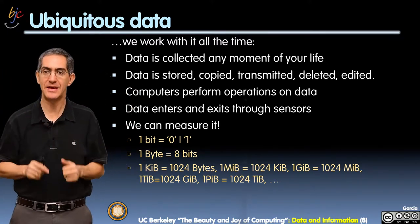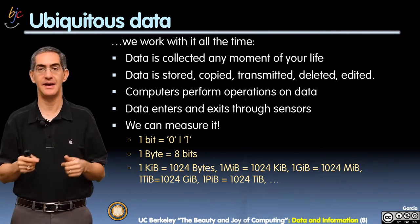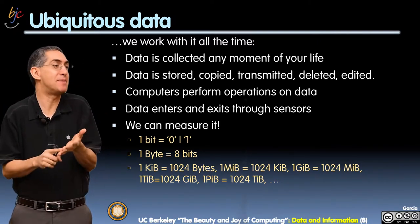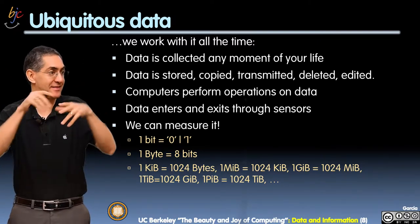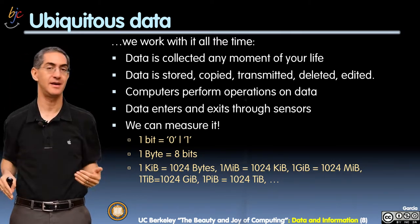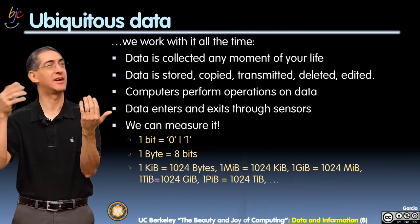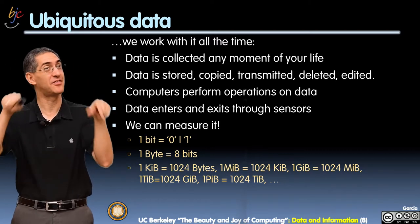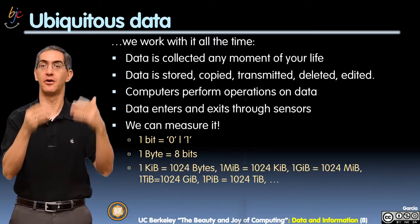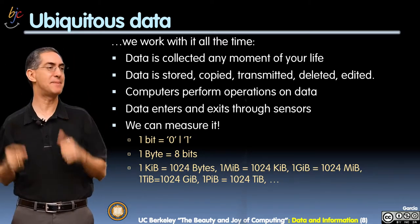1,024 gibibytes is a tebibyte — like 'terra,' which relates to four, the fourth. After four is five, and the word for five is kind of like pentagon, five sides. So 1,024 tebibytes is a pebibyte.